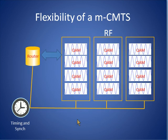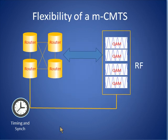For example, if a cable MSO deploys an application that requires a large amount of RF capability and only a little bit of routing, a modular CMTS can be configured as shown. Conversely, that same CMTS can be configured quite differently if large amounts of routing are required but only a small amount of RF capability is required.